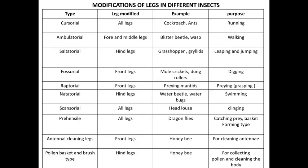These are the different modifications found in insect legs. The legs may be modified — all three types of legs, or only the middle or hind legs — for a special purpose. For example, the cursorial type of legs present in ants have all three pairs of legs modified for running purpose. Let us see them one by one.